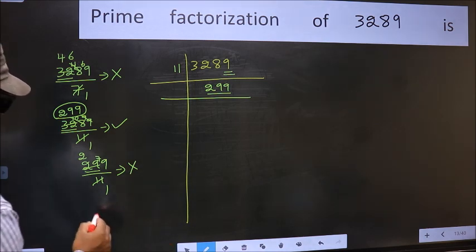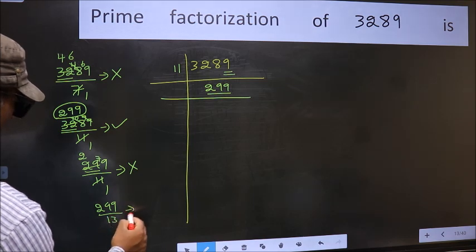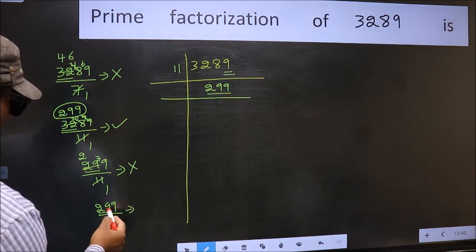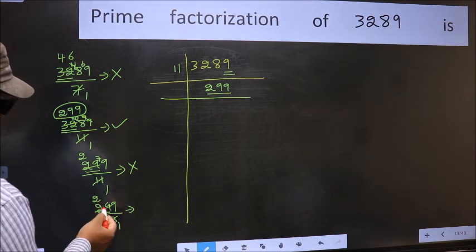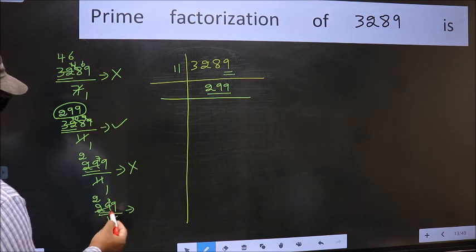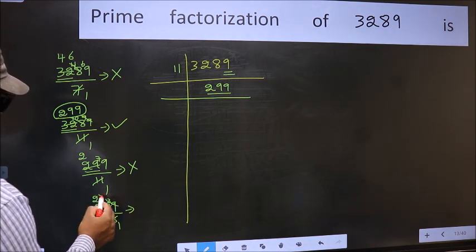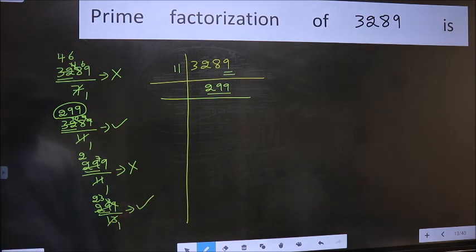Next prime number 13. A number close to 29 in the 13 table is 13 times 2, 26. 29 minus 26 is 3, carried forward 39. When do we get 39 in the 13 table? 13 times 3 is 39. No number has been left out. So this is divisible by 13.